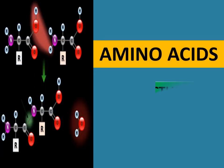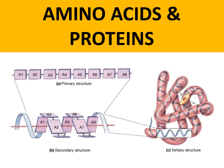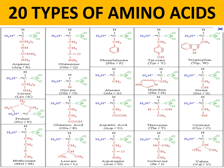Today we are here to discuss the structure of amino acids. As known to us, amino acids form the building block of all protein molecules. Moreover, there are 20 different types of amino acids found in nature. So the question that arises is, what is the basic structure of all these amino acids? Let's have a look.